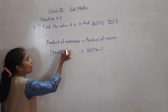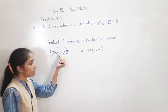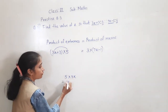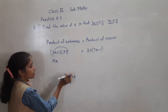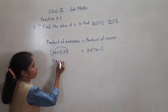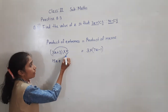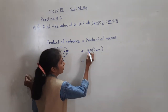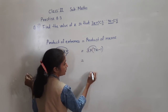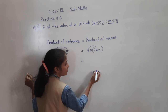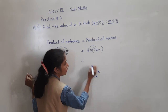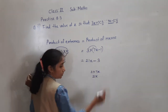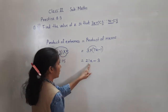Now let's multiply this out. 5 multiplied by 3X gives 15X. Then plus 5 multiplied by 3, which is 15. Is equal to: 3 multiplied by 7X gives 21X, and 3 multiplied by 1 gives 3. So left side is 15X plus 15, right side is 21X minus 3.